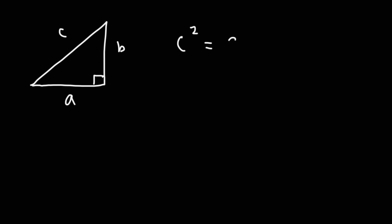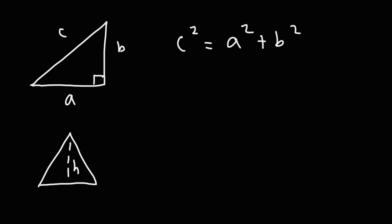Now if we have a triangle with vertices A, B, and C, the next formula to be familiar with is the Pythagorean theorem: C squared is equal to A squared plus B squared. When dealing with triangles you also need to calculate the area — the area of a triangle is one-half base times height.